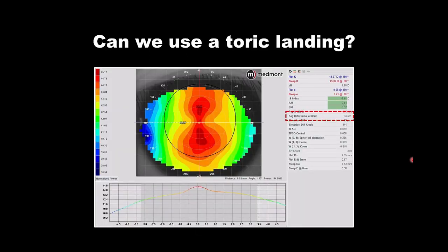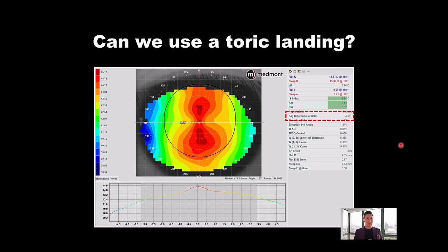Tough case for sure. The first question is: can we use a toric landing? This is important because we may need the lens to stay on a specific axis in order to manipulate one meridian more than the other. Here in this eye, we go back to that sag differential — it's 34 microns of height difference. So on this with-the-rule eye, the steep meridian is 34 microns deeper. We can therefore create a toric.